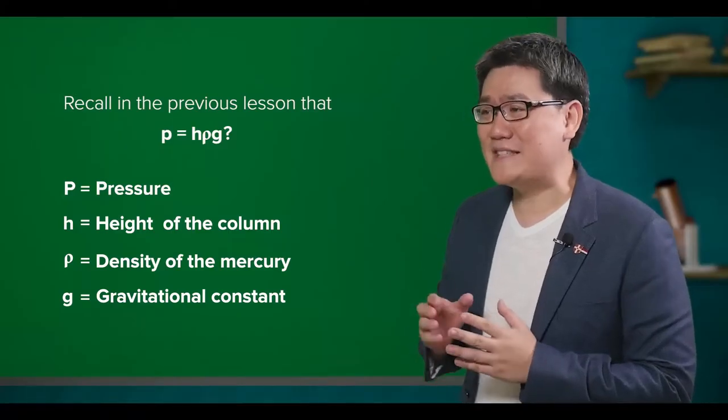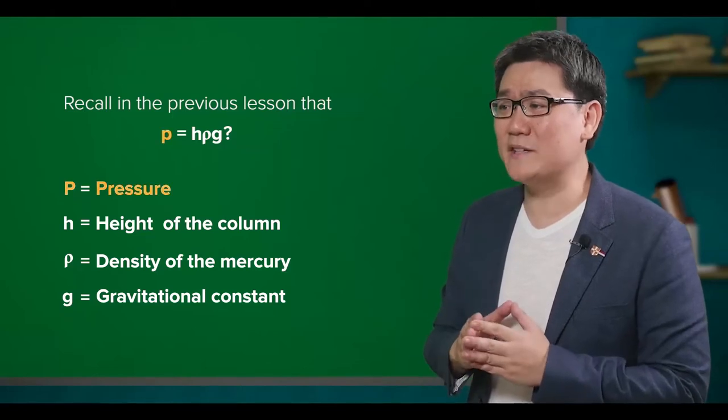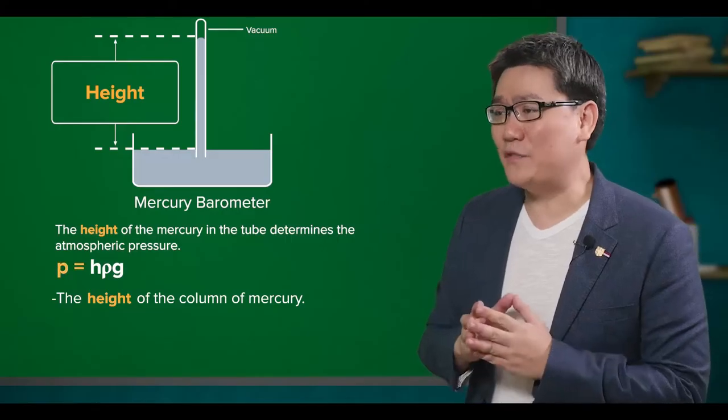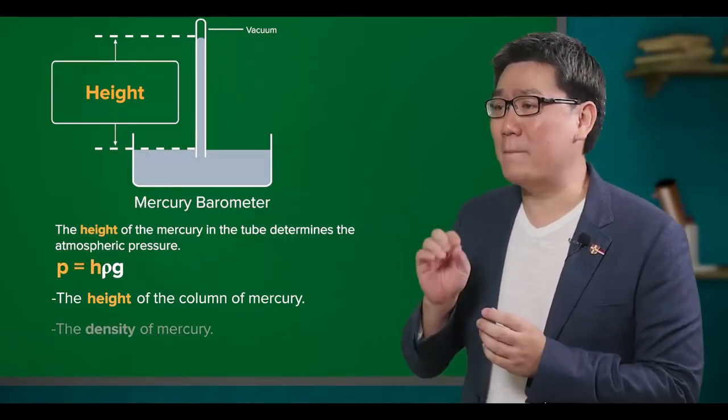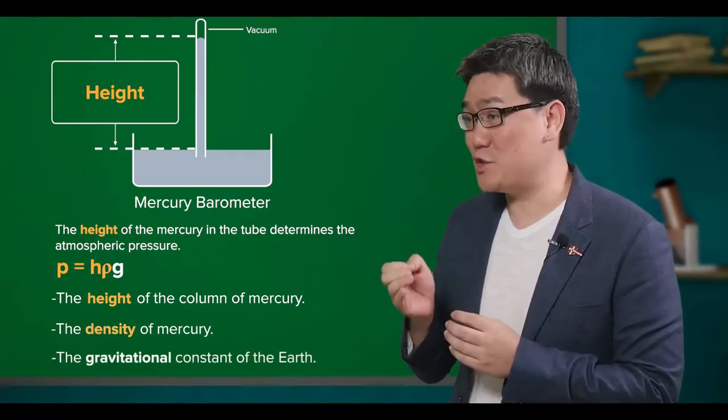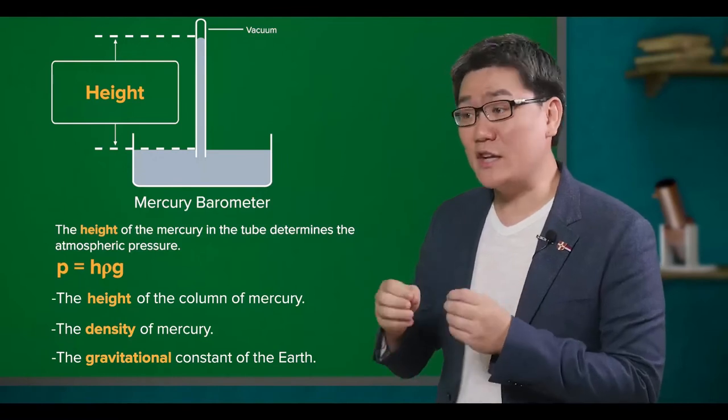Recall in the previous lesson that p equals h rho g? The height of the column of mercury multiplied by the density of mercury and gravitational constant would give us the pressure.